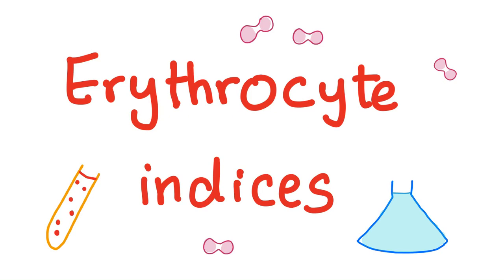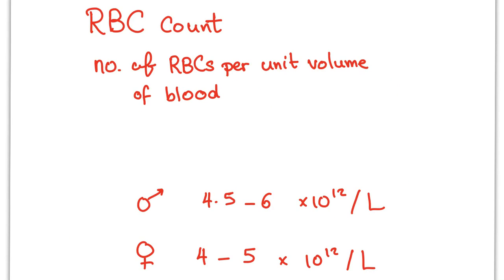Erythrocyte indices. What's an erythrocyte? Erythro means red, cyte means cell. Indices is of course the plural of index. Let's start with RBC count — erythrocyte count.